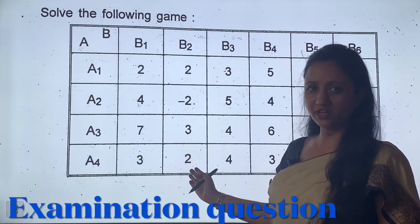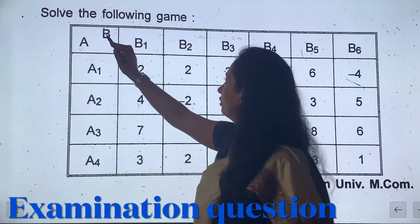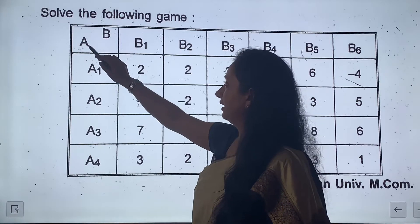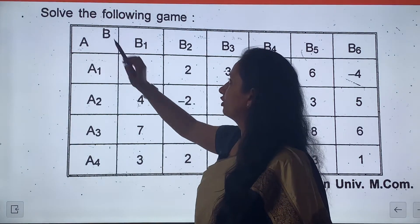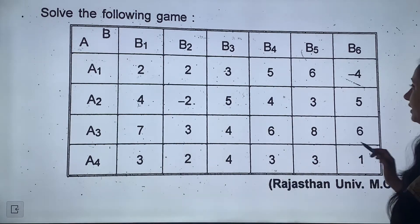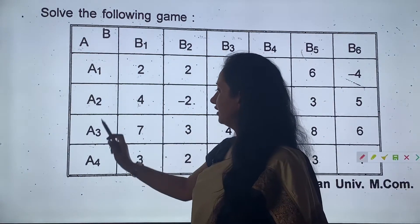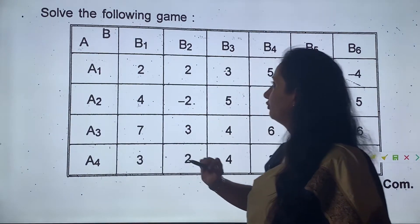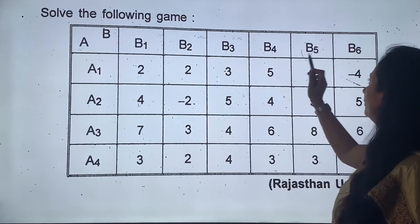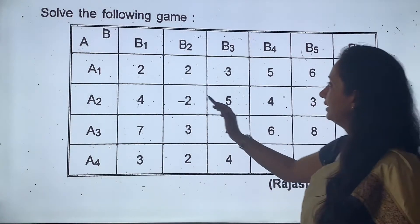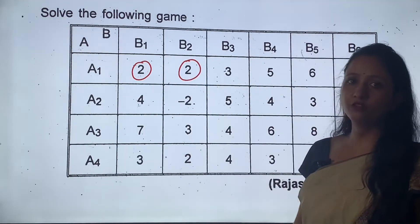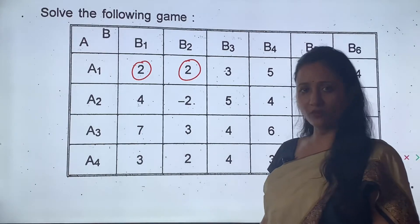This is our examination question: solve the following games. Row player is A and column player is B. A की strategies हैं A1, A2, A3, A4 और B की B1, B2, B3, B4, B5 and B6. These are the payoffs given. Now we will solve the question.